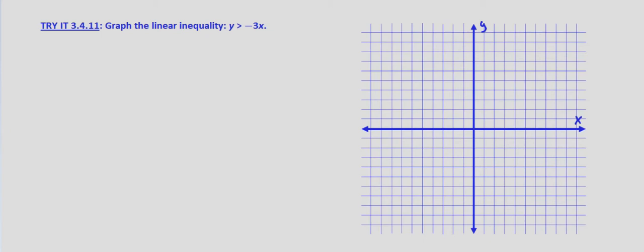It's 0,0, so it goes to the origin, so we can't test the point 0,0. That's the only difference. We still just pick a point on either side of the line to test it. We graph the boundary line first, and then we shade the side that yields a true inequality.